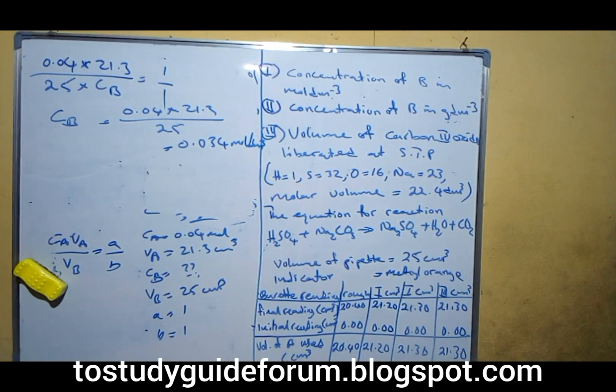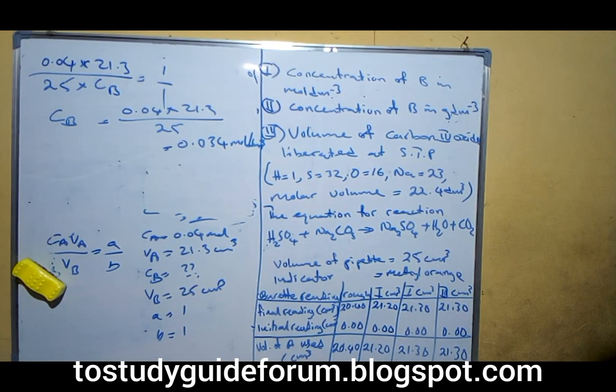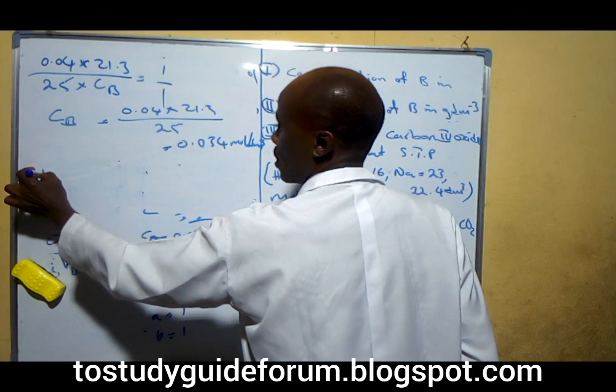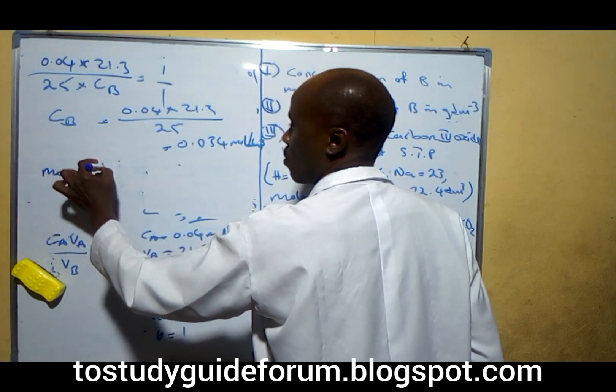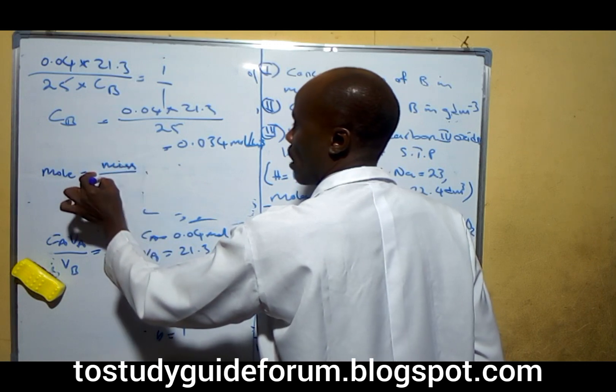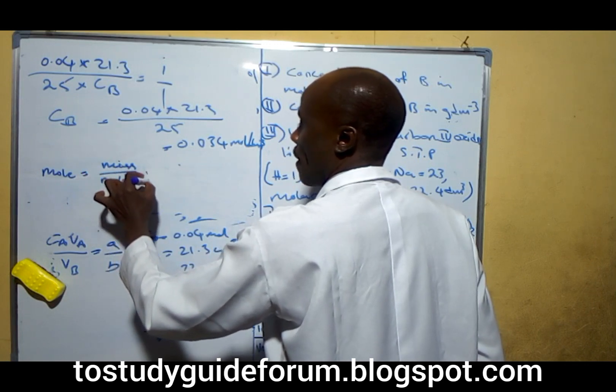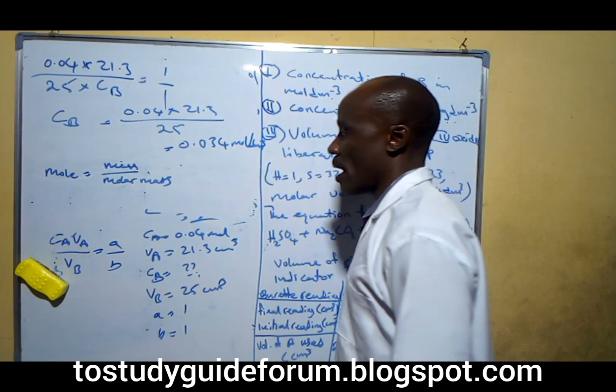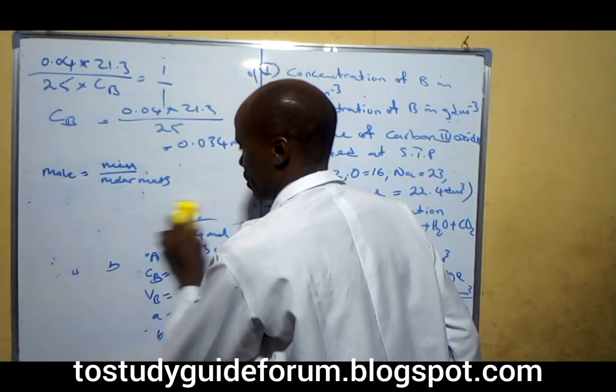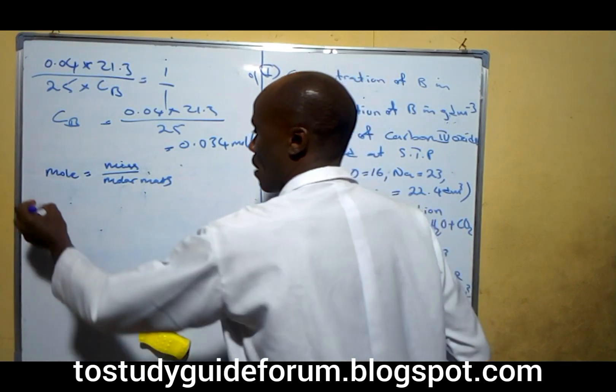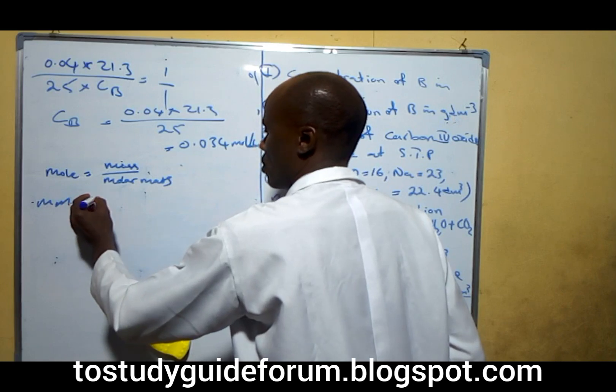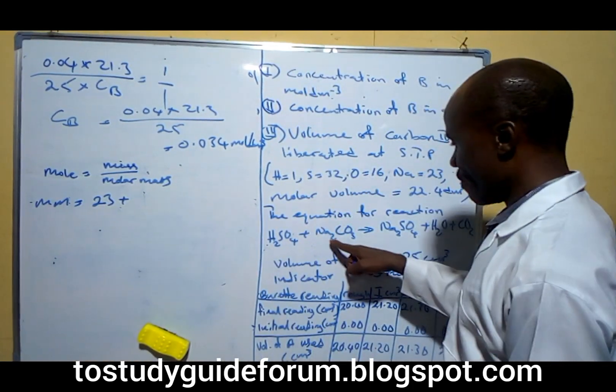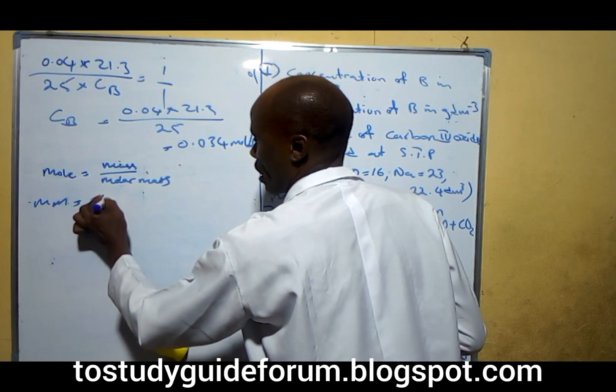Concentration of B in grams per dm³. We have the mole concentration, and we know that mole is equal to mass over molar mass. The molar mass of sodium is 23, and we have it two times here, that means 2 times 23.